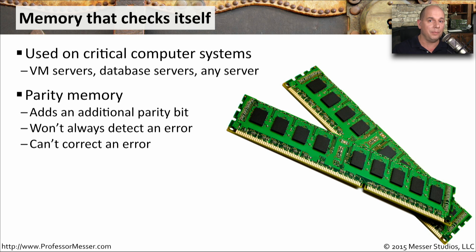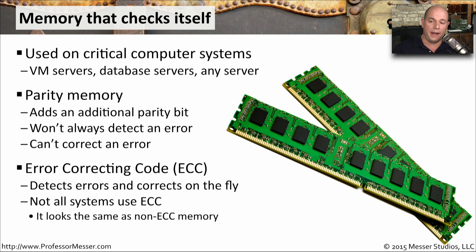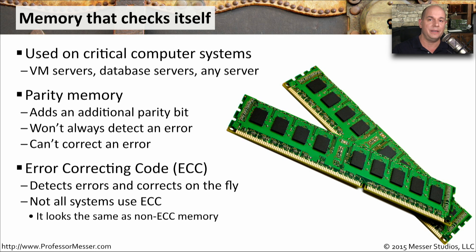A type of memory that is able to make a correction is called error correcting code memory, or ECC memory. This not only identifies that there has been an error, but it's able to correct that memory on the fly. Not all computers use ECC memory — in fact, very few of your computers are probably using ECC memory. It is a bit more expensive and is really designed for enterprise-type systems. A very large server may have a motherboard that requires ECC memory and won't work unless you install it.